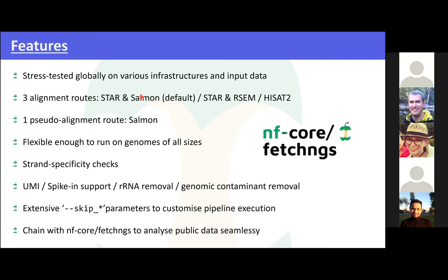And so there's a warning that's currently generated that tells you whether you've got it right or wrong. And a whole bunch of other features like UMI support, rRNA removal, genomic contaminant removal I did recently. And also you can chain this, the fetch ngs pipeline, which is another pipeline that I've written that allows you to download data just from a set of IDs, SRA IDs. And it generates a sample sheet that you can directly plug into this pipeline. So yeah, various cool features.